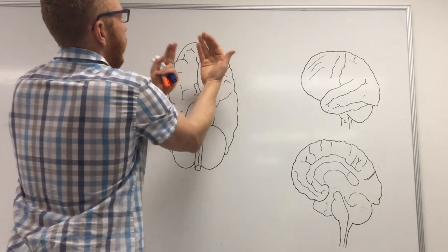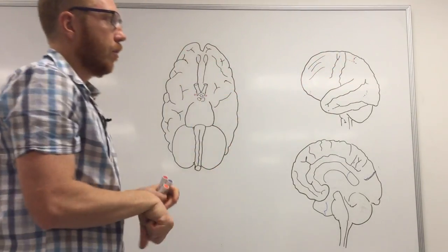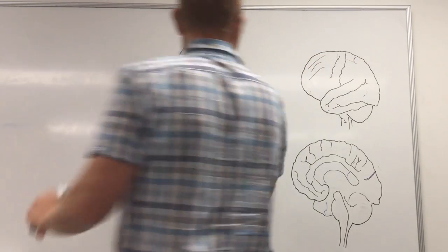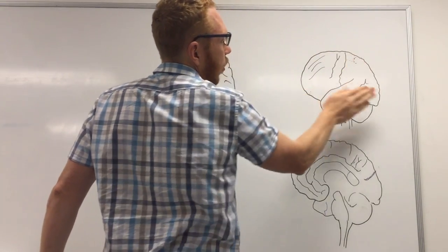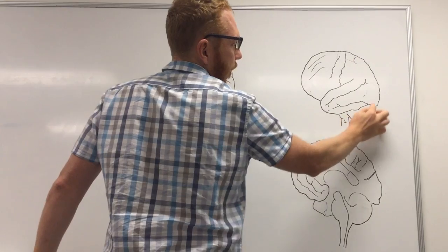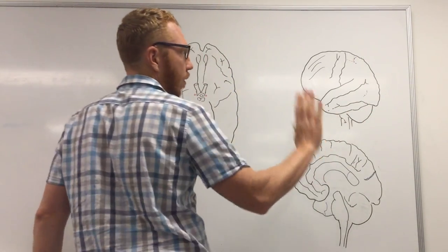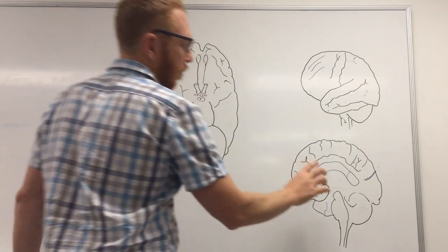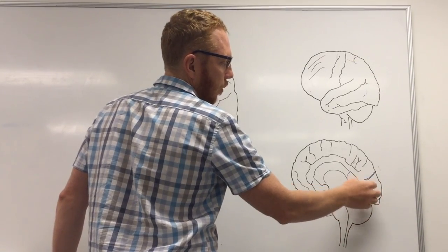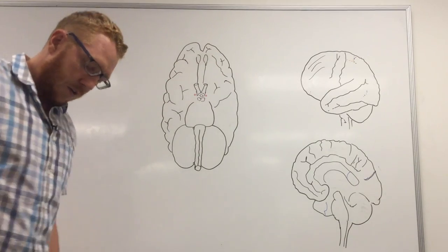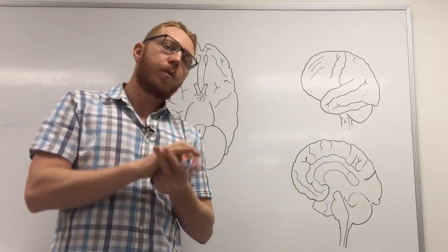Sitting behind all of this are the lobes of the cerebrum. Looking at the lateral view, we've got the frontal, parietal, temporal, and occipital lobes, with the cerebellum underneath and the brain stem. Looking at the right side of the brain, we also have the frontal, temporal, brain stem, cerebellar, occipital, and parietal lobes.